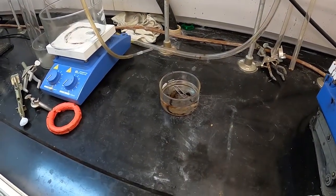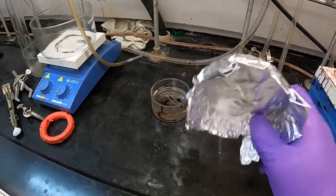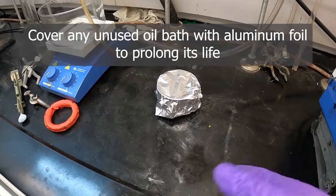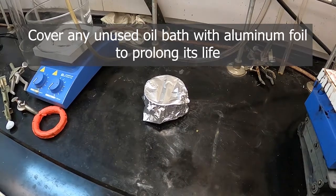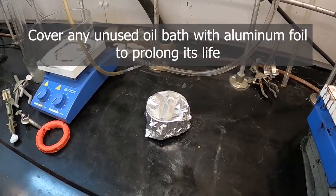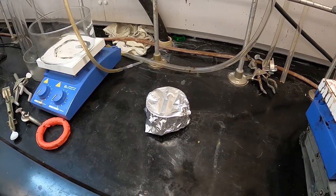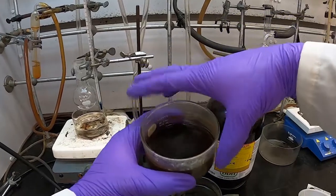When we're not using an oil bath, we can set it aside off of our hot plate and just make a simple cover out of aluminum foil to cover it. That will keep dust and other things out of it so that it stays good for as long as possible. We don't have to replace that oil provided we don't heat too hot.